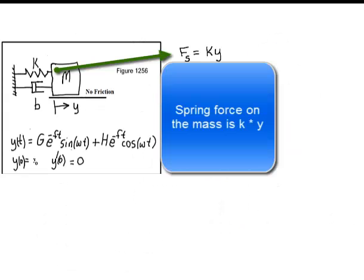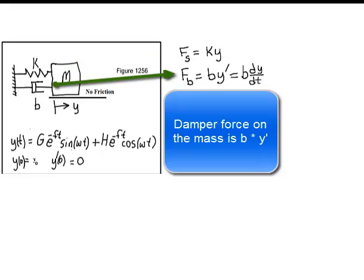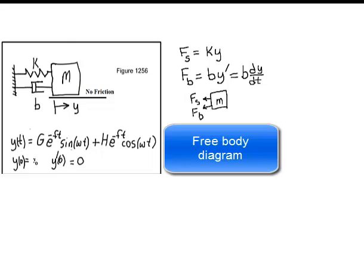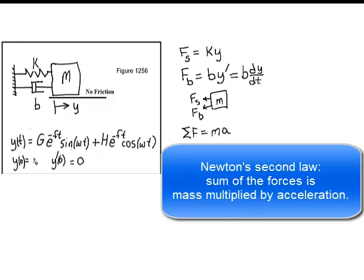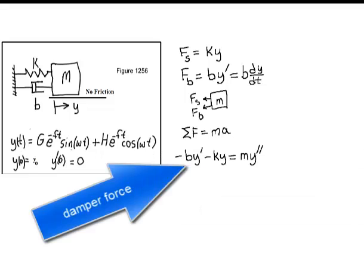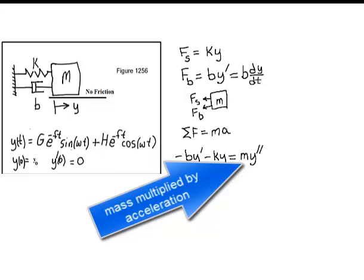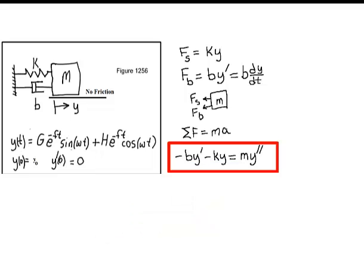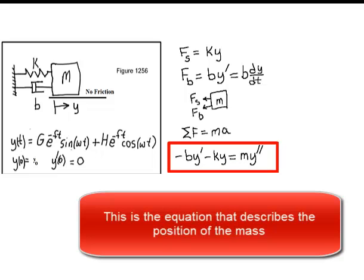That's the spring force on the mass. There's the damper force on the mass, b times y-prime. That's the free body diagram showing the spring force and the damper force on the mass. That's Newton's second law — the sum of forces equals mass multiplied by acceleration. There's the damper force, the spring force, and mass multiplied by acceleration. This is the equation that describes the position of the mass.